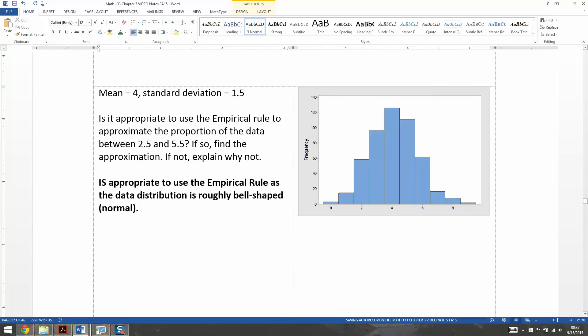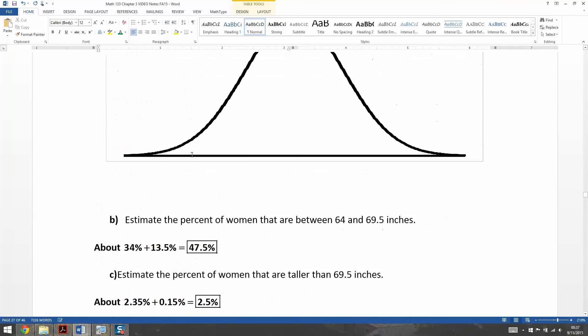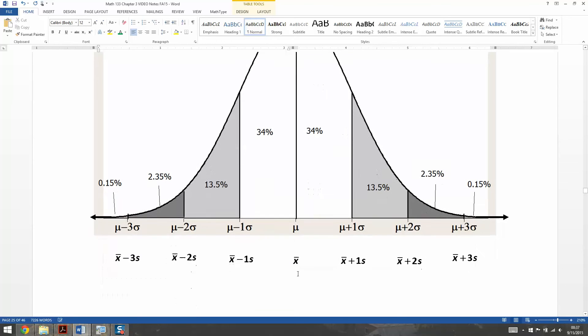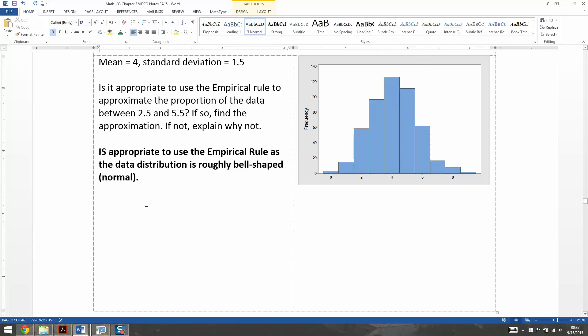Now we have to figure out how much is between 2.5 and 5.5. So these are the numbers they're giving us, 2.5 and 5.5. What we really need to do is figure out where those fall on this normal curve. We know the mean is 4 in the middle right here at the center. And then we need to figure out where is 2.5 and 5.5 - are they 1 away, 2 away? What's the deal?